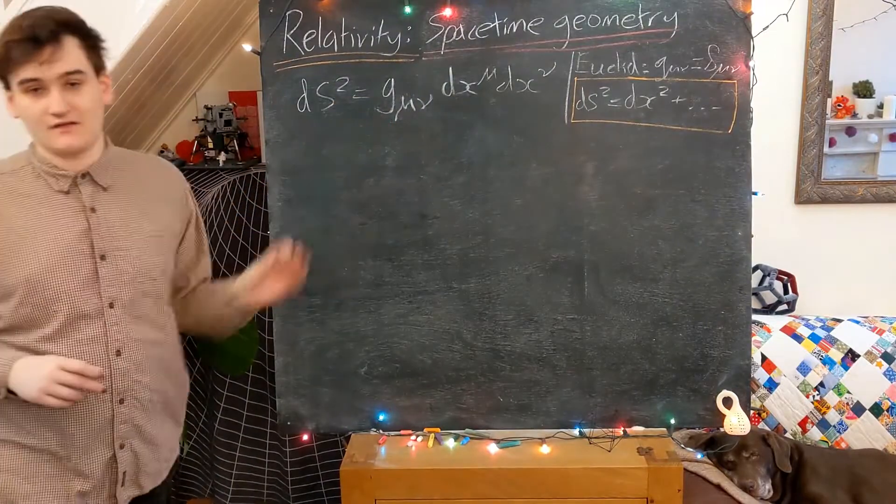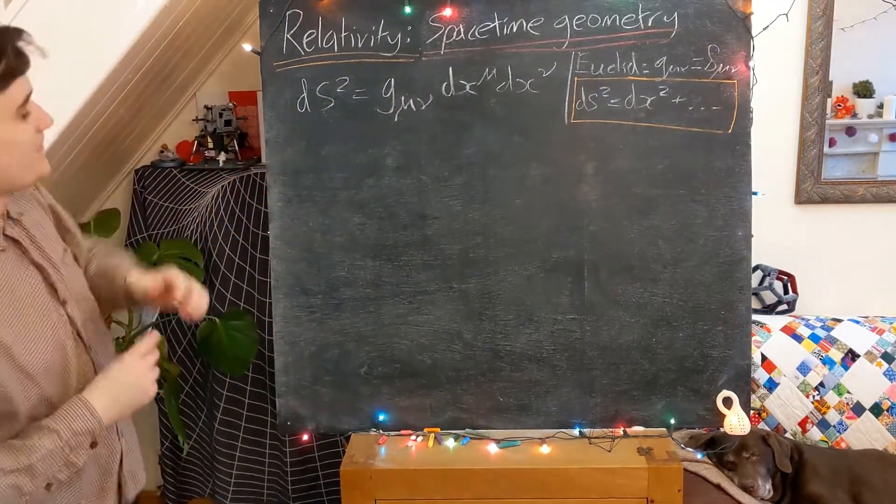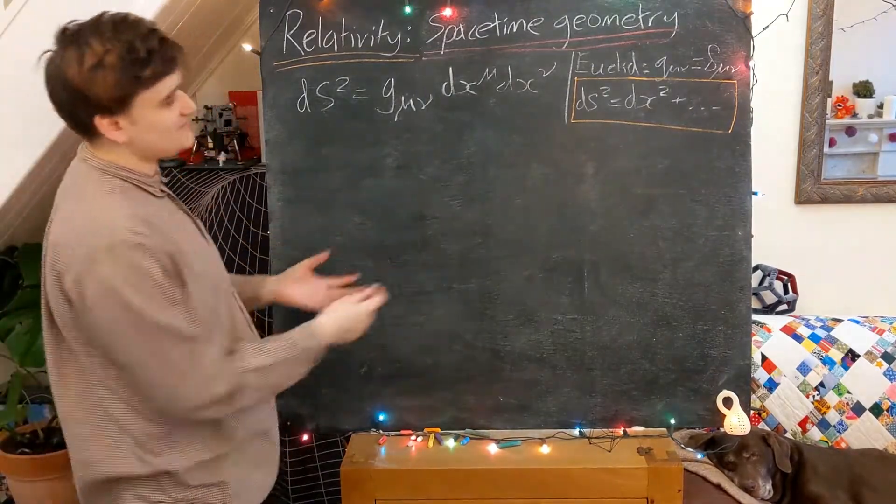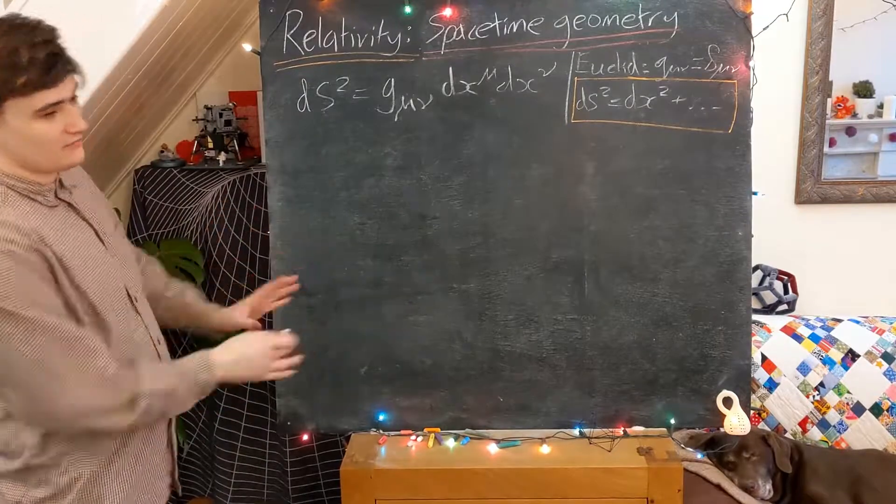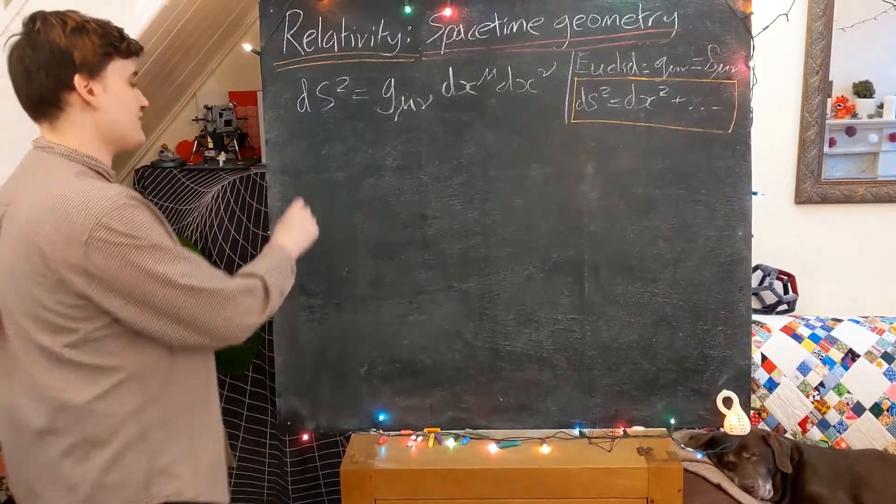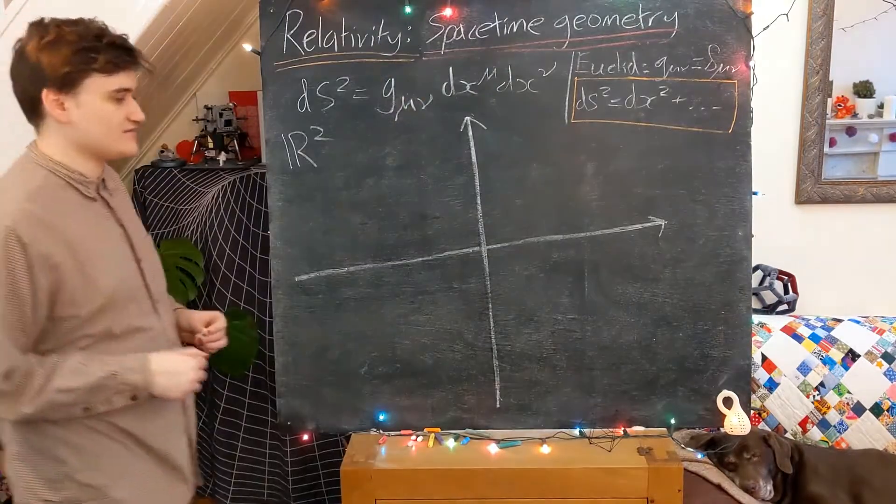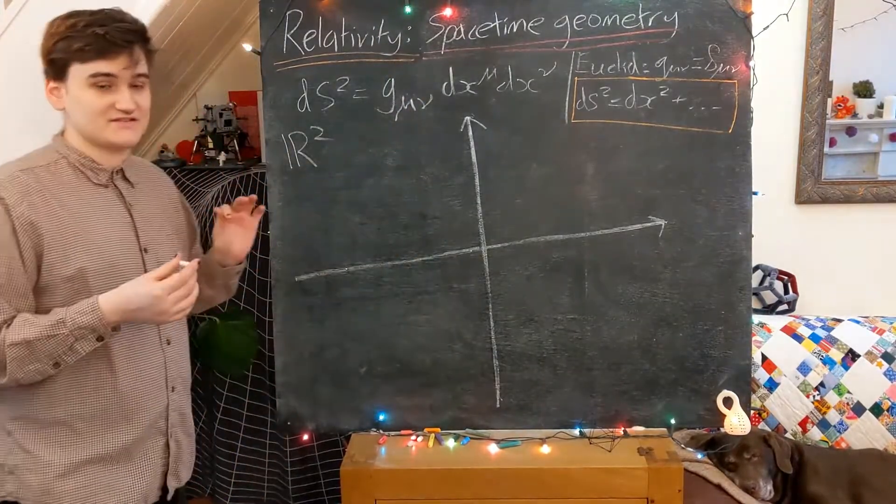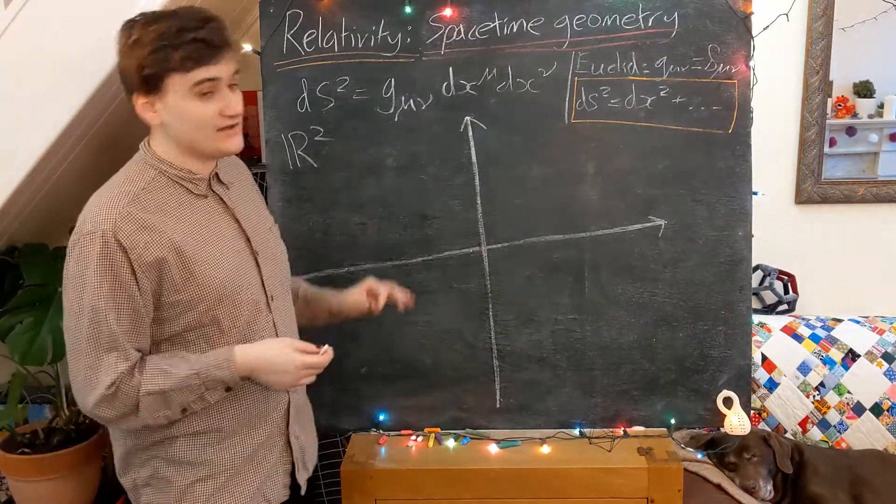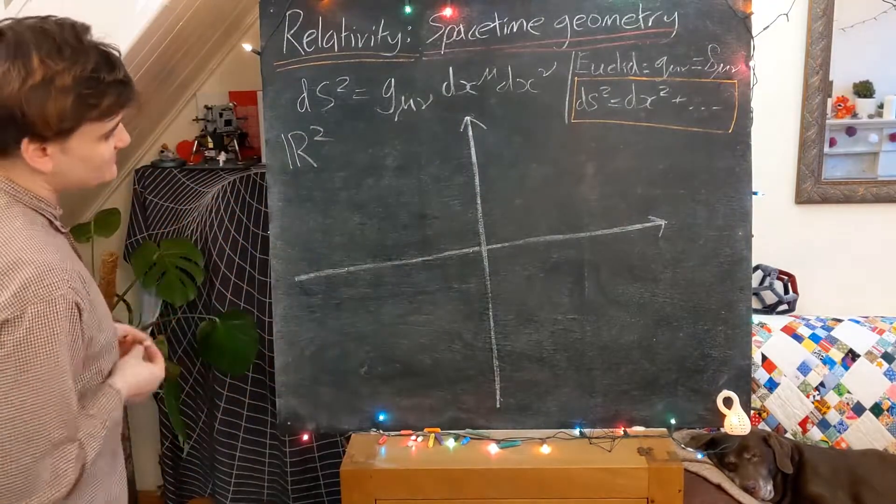Let's just take a second to explore this geometry a little bit more now. I'm going to consider the Euclidean geometry again, just so I can draw a picture. We're going to consider the Euclidean geometry of R2. Okay, so this is our copy of R2, and now what we're going to do, or rather how we're going to look at the geometry defined by this line element.